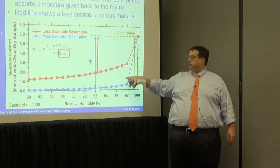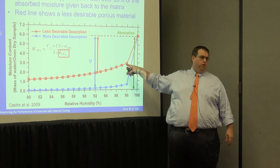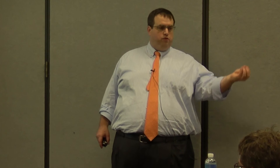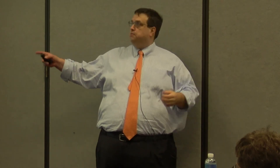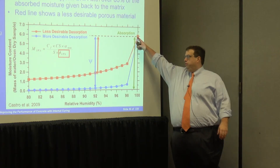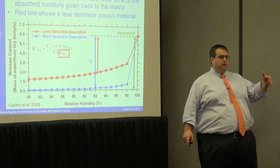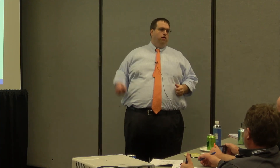Looking at two desorption curves: the blue curve is favorable — lots of water leaves at high humidities. The red curve is less attractive because only a fraction of the water leaves. The difference comes down to pore size. The blue curve has larger pores; the red curve has tiny pores. Natural pumice, for example, can have very small pores that actually compete with the cement matrix for water rather than releasing it. Something with 20% porosity that doesn't desorb simply doesn't work. The good news is that all North American lightweight aggregates — expanded clays, shales, and slates — follow the blue line.